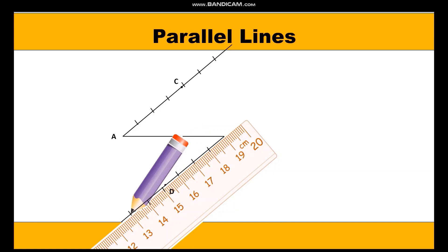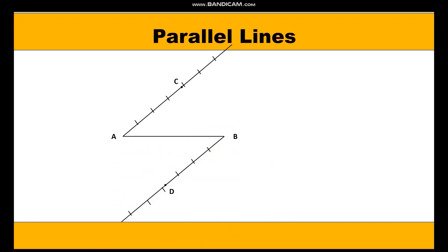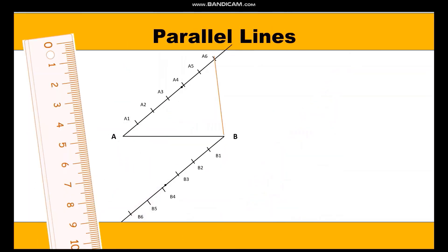Now we shall mark 6 points on AC and 6 points on BD. Let's name them as A1, A2, A3, A4, A5, and A6 on AC. Similarly, B1, B2, B3, B4, B5, and B6 on BD.